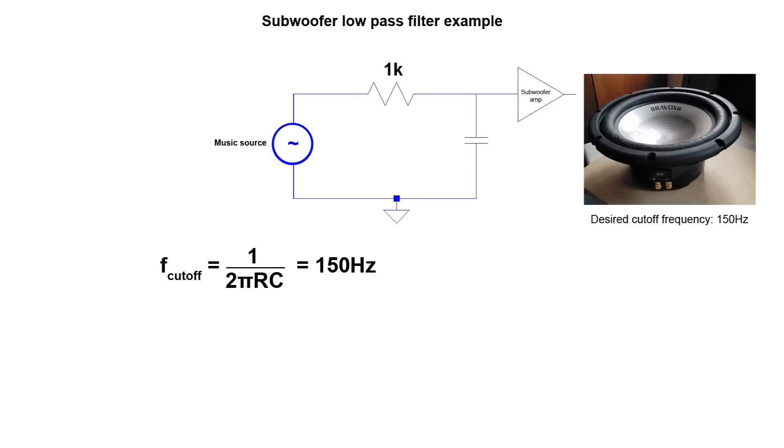So here I've rearranged the equation to give me a way of calculating the capacitance needed for the filter based on a chosen resistance value. And it turns out that the value I need is 1.06uF. Let's round that down to 1uF.